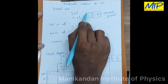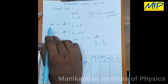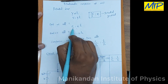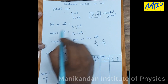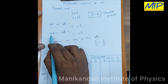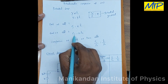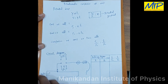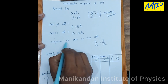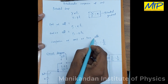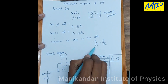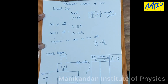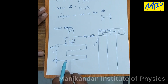Using this principle, I can write the EMF of cell 1 as E1 equals k into l1, and the EMF of cell 2 as E2 equals k into l2. So the comparison of the EMF of the two given cells gives E1 by E2 equals l1 by l2.